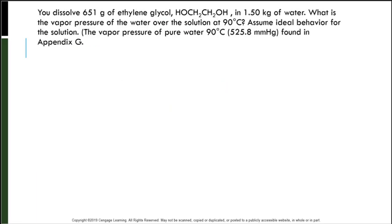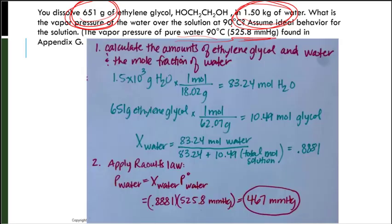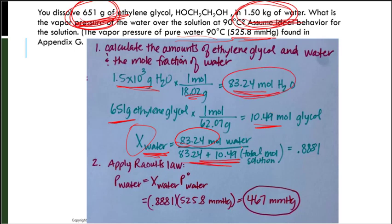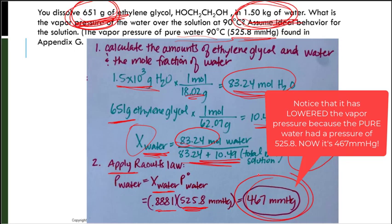Let's do a sample problem. You dissolve 651 grams of ethylene glycol in 1.5 kilograms of water. What is the vapor pressure of the water over the solution at 90 degrees Celsius? The vapor pressure of pure water at 90 degrees is 525.8 mmHg, found in Appendix G. I found the moles of water and moles of ethylene glycol, then computed the mole fraction of water as moles of water over total moles, getting 0.8881. Applying Raoult's Law: 0.8881 times 525.8 mmHg gives 467 mmHg.